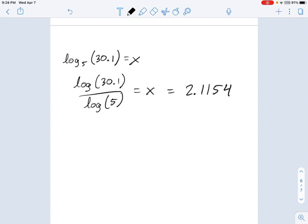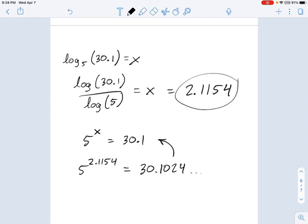And you can always double check to see if you're correct. That's the nice thing about logarithms. Remember how logarithms and exponents are inverse functions? You could say 5 to the x equals 30.1, and then plug in what you think x is, and say 5 to the 2.1154 equals, and if you plug that into your calculator, the calculator will tell you 30.1024. And you can see, well, that's really close. The only reason it's not exactly correct is because I rounded this to only 5 decimals instead of 10 or 20 decimals.